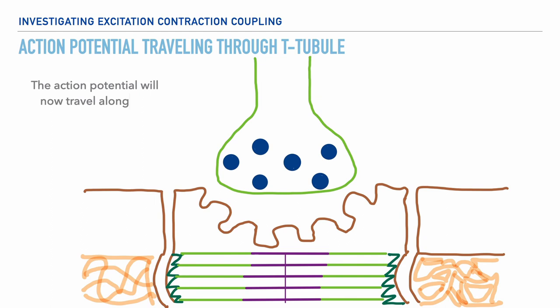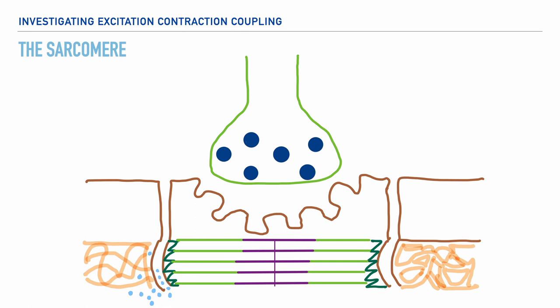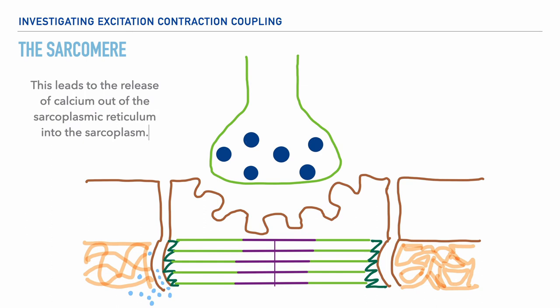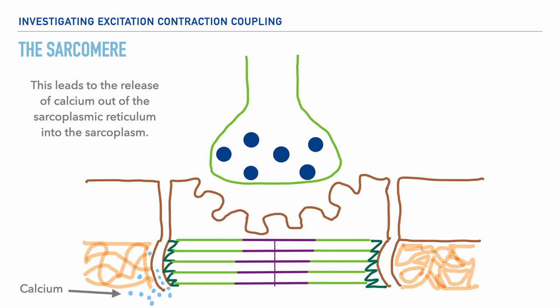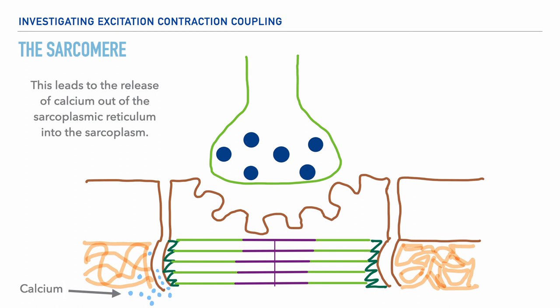Now we're at a point where the action potential is going to travel along the length of what we refer to as the transverse tubule, or T-tubule for short. What this initiates is the release of calcium from the sarcoplasmic reticulum into the sarcoplasm, and it's the release of calcium which then allows for the initiation of a muscle contraction.